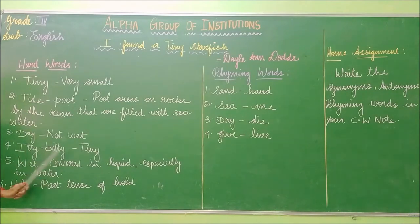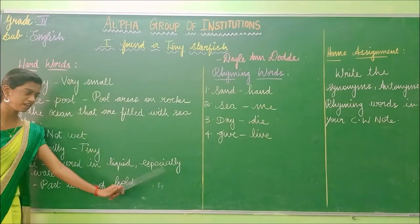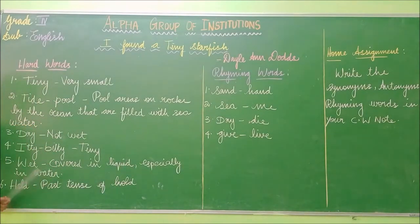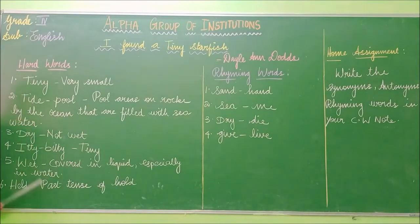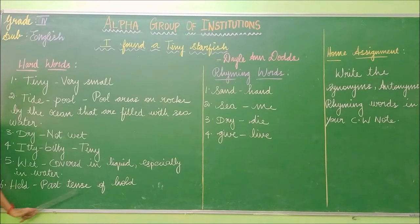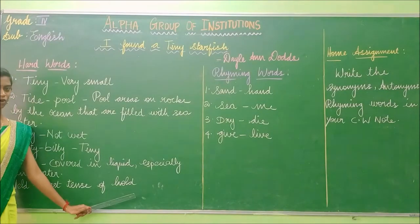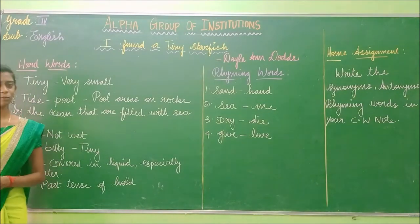Itty bitty — tiny. Wet — covered in liquid, especially in water. Held — past tense of hold. Okay, I've understood the meaning of these words. Shall we read the poem?